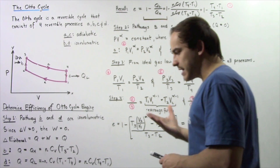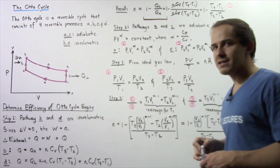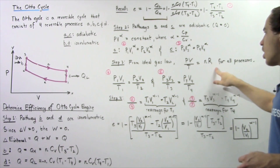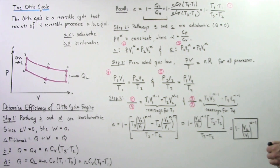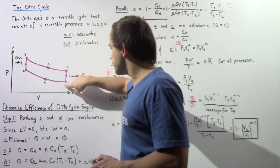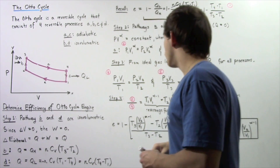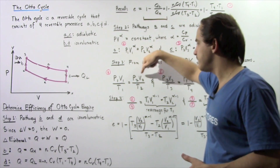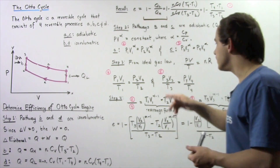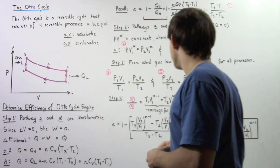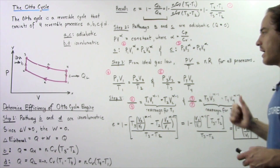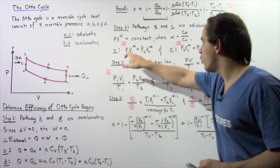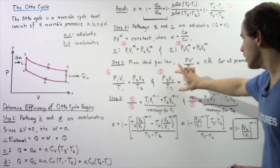In step 3, we use the ideal gas law. For any position, PV divided by T equals N times R, where N is the constant number of moles and R is also a constant. For process A from position 1 to 2: P1V1/T1 equals P2V2/T2 — call this equation 4. For process C from position 3 to 4: P3V3/T3 equals P4V4/T4 — call this equation 5.